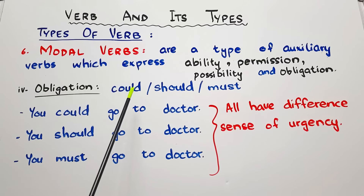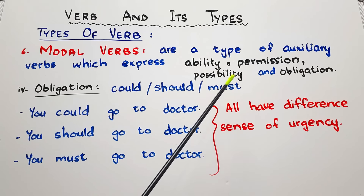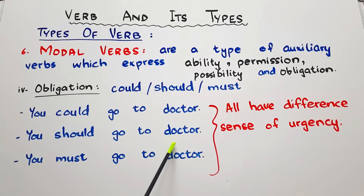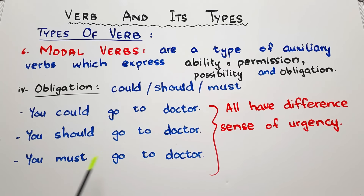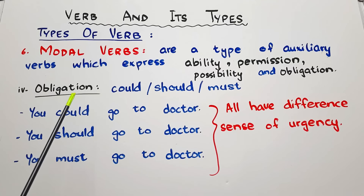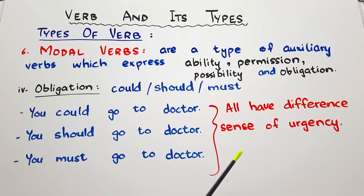Modal verbs also help us talk about obligations, suggestions, or advice. We can use 'could,' 'should,' and 'must.' 'You could go to the doctor' — it is a simple, non-urgent suggestion. 'You should go to the doctor' — someone is saying it strongly. 'You must go to the doctor' — there is no other way, you need to visit the doctor right now. So 'could,' 'should,' and 'must' are used depending on the urgency of the situation.